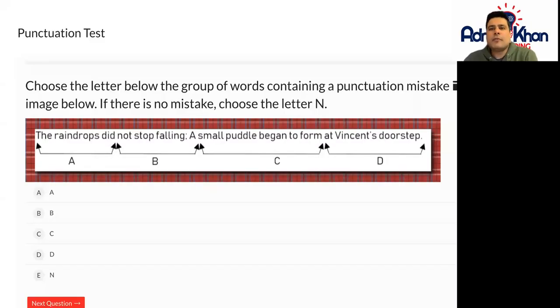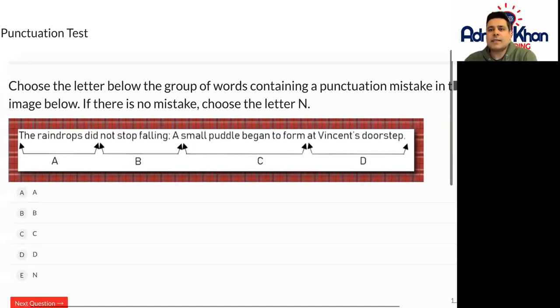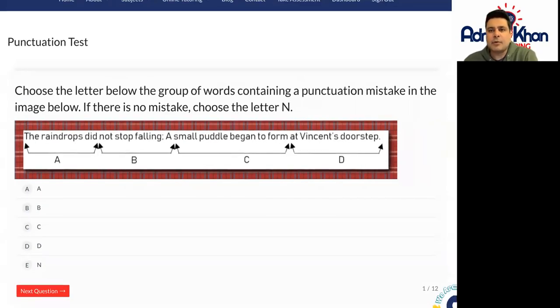Hi, welcome to 11 Plus English punctuation 7. The question states: choose the letter below the group of words containing a punctuation mistake in the image below. If there is no mistake, choose the letter N.